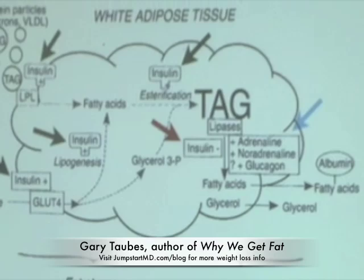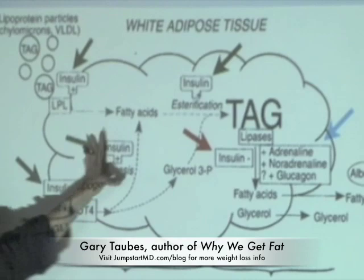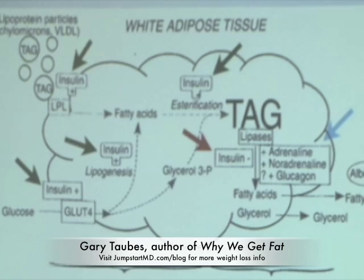Here's a more complicated version: hormonal regulation of fat cells. What controls fat storage — putting fat in — and fat mobilization — getting fatty acids out? This is from a 2010 textbook, but it was known since the early 1960s. Insulin, the hormone insulin, is the primary regulator of fat metabolism.